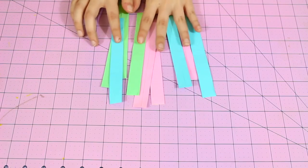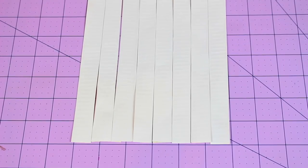So now that you've made your first strip, you are going to need 10 in your different colors. Once you're done that, you're going to line up all of your white strips.